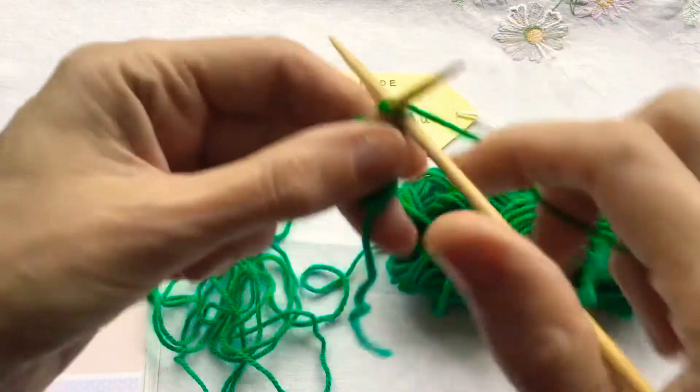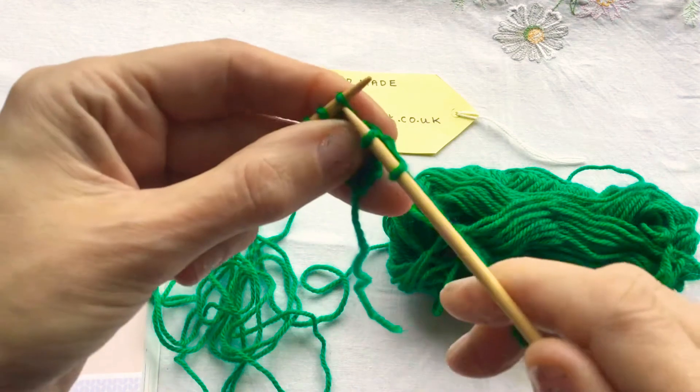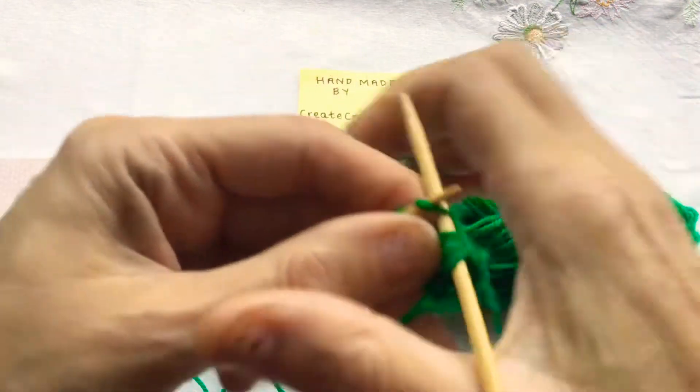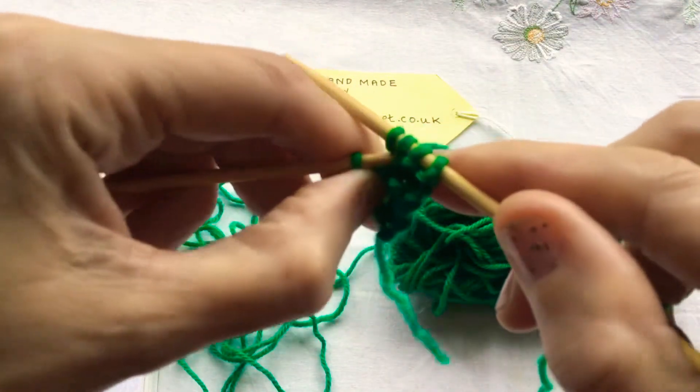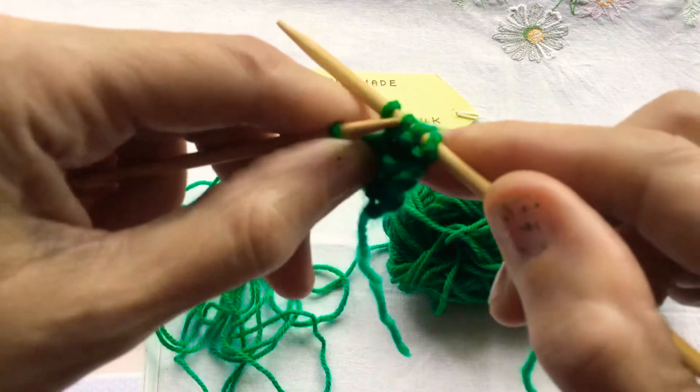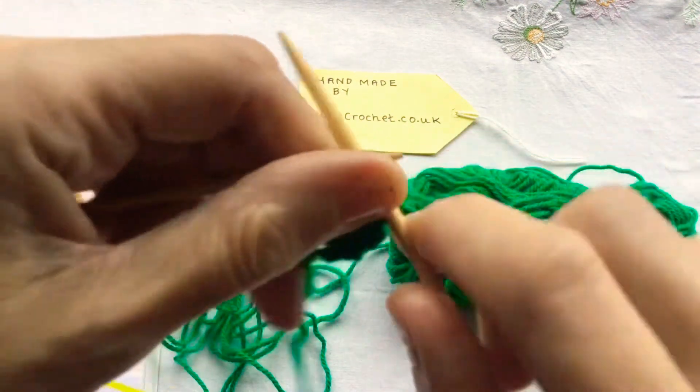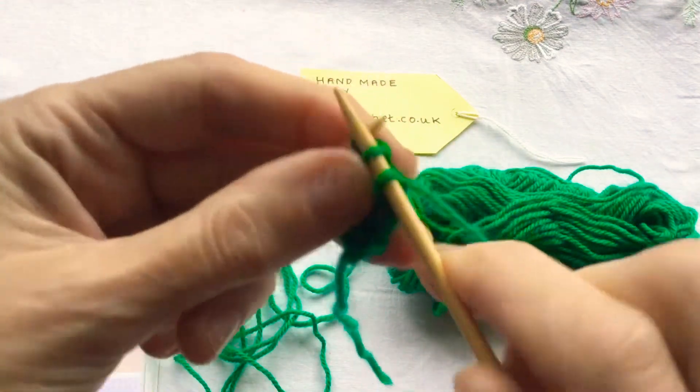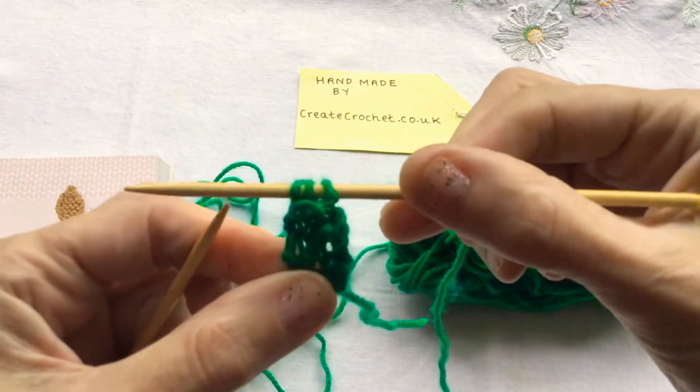Knit one, slip the next two knitwise, knit one, and pass those two slip stitches over the needle, then knit one. So now we have three.